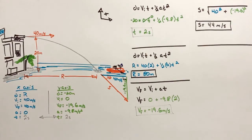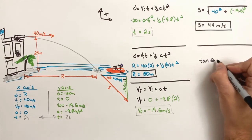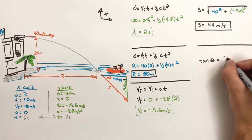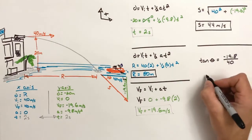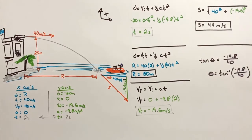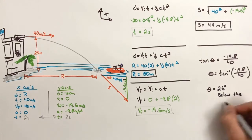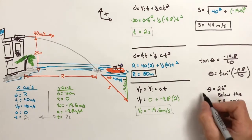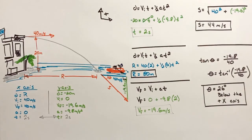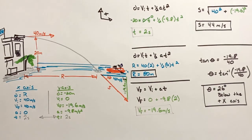Lastly, we're going to solve for the angle which the shell is traveling when it strikes the water. Using the tangent function and the two components of our right triangle formed by the speed and the final velocity vectors in each axis, we find that the shell is traveling 26 degrees below the positive x-axis when it strikes the water. In this problem, we've solved for the range of the shell as well as its final speed and direction when it lands in the water.